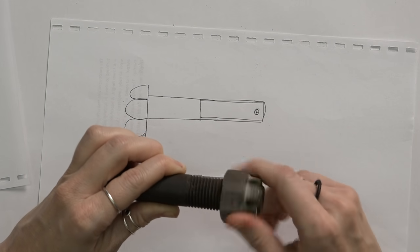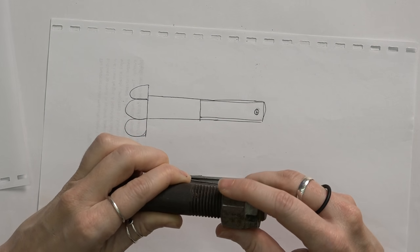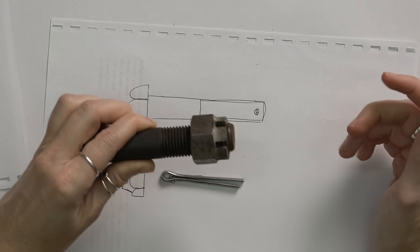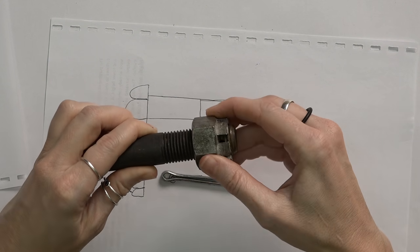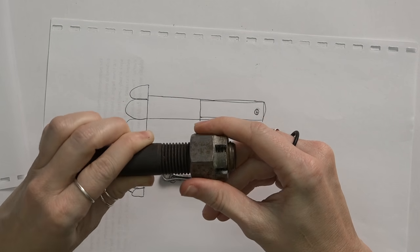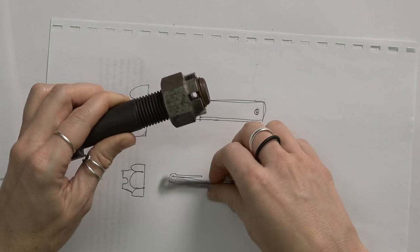So I tighten it all the way until I can see that the grooves and the small hole is lining up. Now at this stage I can still move this castle nut around, right? But this is what the split pin is for.